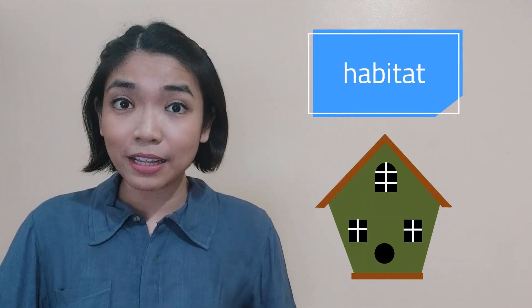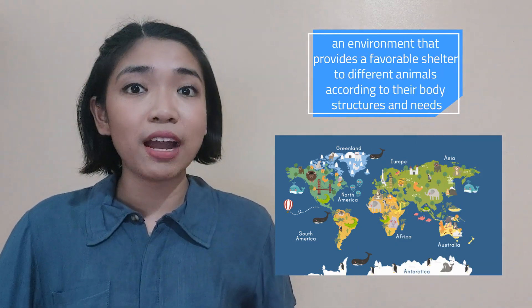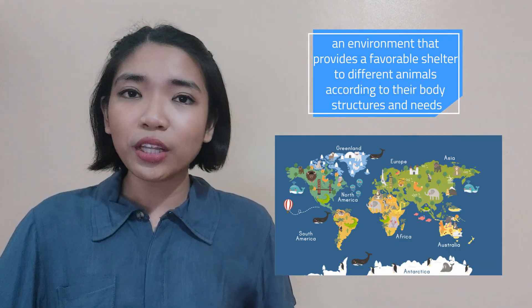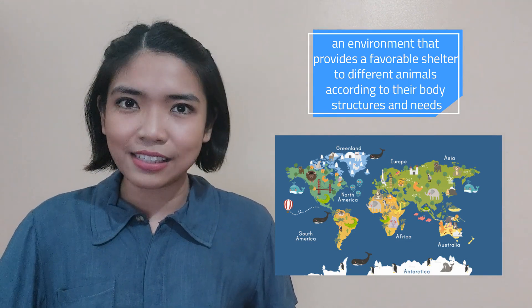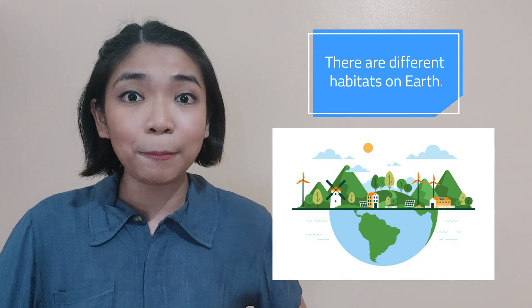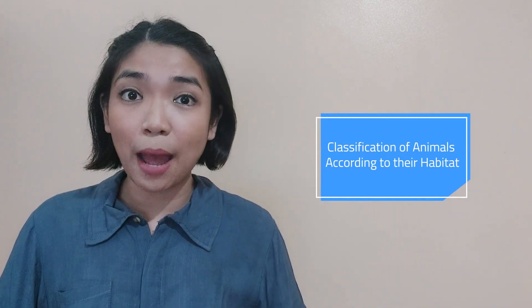A while ago, I mentioned habitats. A habitat is an environment that provides favorable shelter to different animals according to their body structures and needs, which is why all animals cannot live in one same place and why there are different habitats on Earth. Today, we are going to learn about the classification of animals according to their habitat.